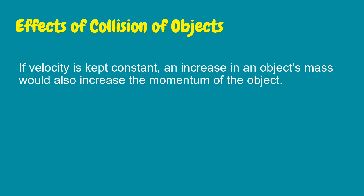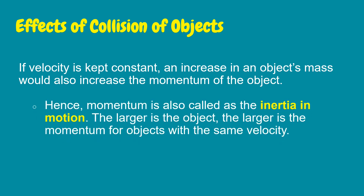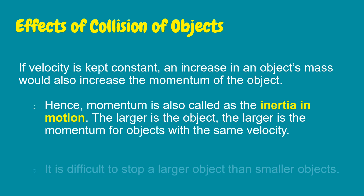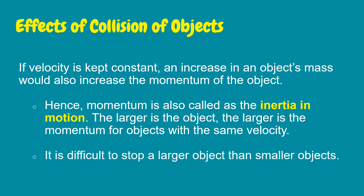If velocity is kept constant, an increase in an object's mass will also increase the momentum of the object. Hence, momentum is called the inertia in motion. The larger the object, the larger its momentum for objects with the same velocity. It is more difficult to stop a larger object than a smaller one.